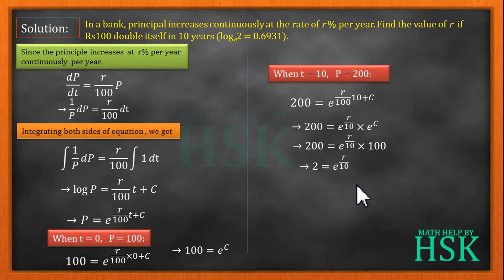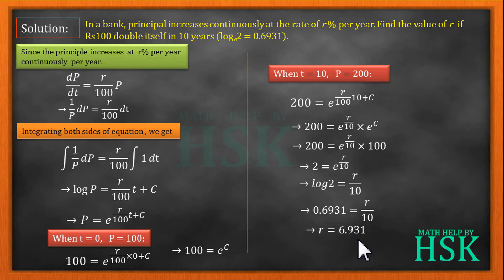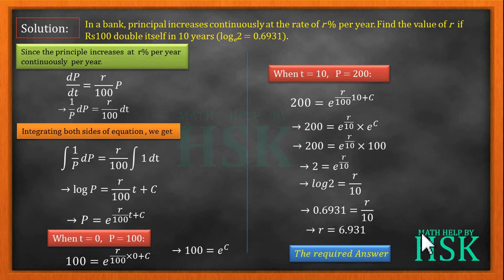Taking log of both sides: log 2 = r/10. Using the given value, r/10 = 0.6931, so r = 6.931. Therefore the rate percent per year is equal to 6.931, which is the required answer.